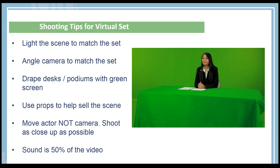Continuing on that thought — use props to help sell the scene. When you film for a virtual set, it really adds to the realism when you use real objects. If actors can interact with real objects on the virtual set, it just adds to the realism. In the example, there's paper sitting on the desk, a pencil sitting there. You can even get more advanced things they can interact with.